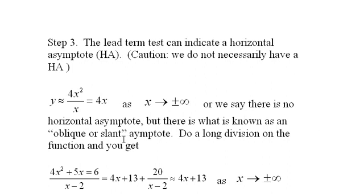Or we say there is no horizontal asymptote, but there is what's known as an oblique or slant asymptote. And we could do a long division on this. We'd end up with 4x plus 13 plus this little fraction here. And as x gets very big, this will just go to zero, which will be approximately 4x plus 13. So really, our function behaves like 4x plus 13 as x goes to plus and minus infinity. Now, for our purposes here with curve sketching, I'm not going to draw this slant or oblique asymptote, but it's good to know that it's there.